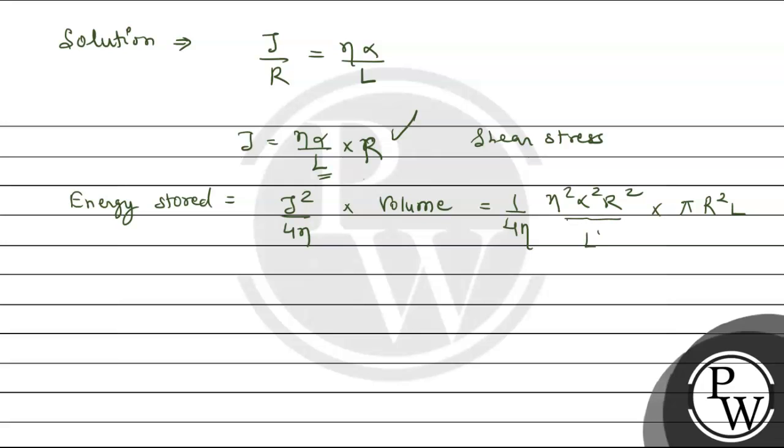Here is L square. So this is 1L, this is 1L cancel, then eta square here, this eta cancels.